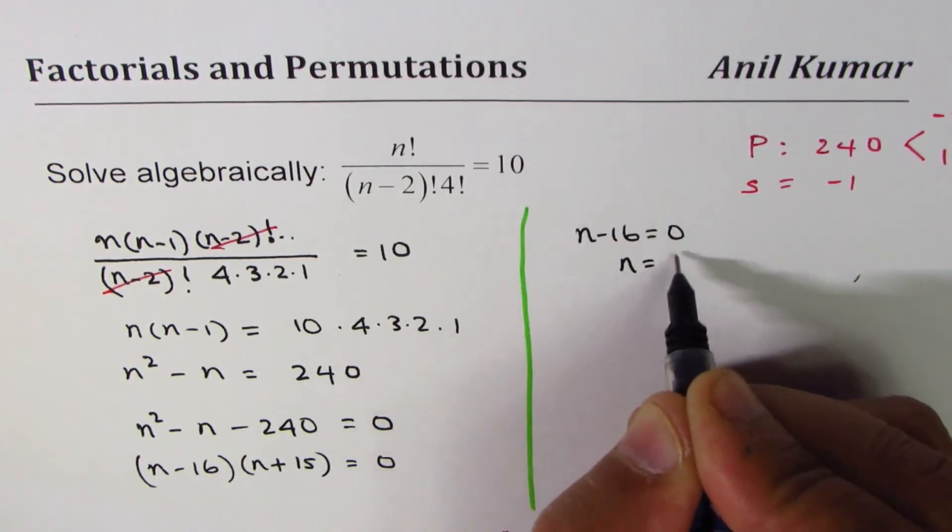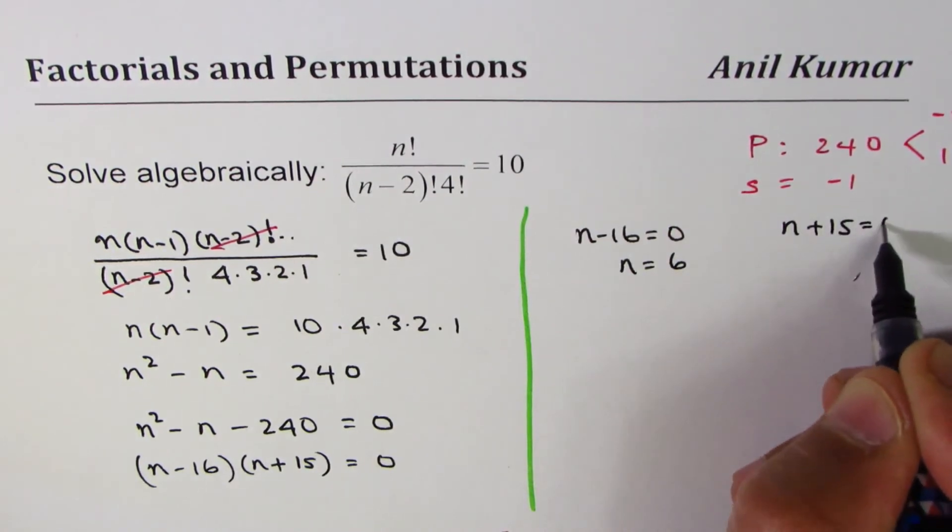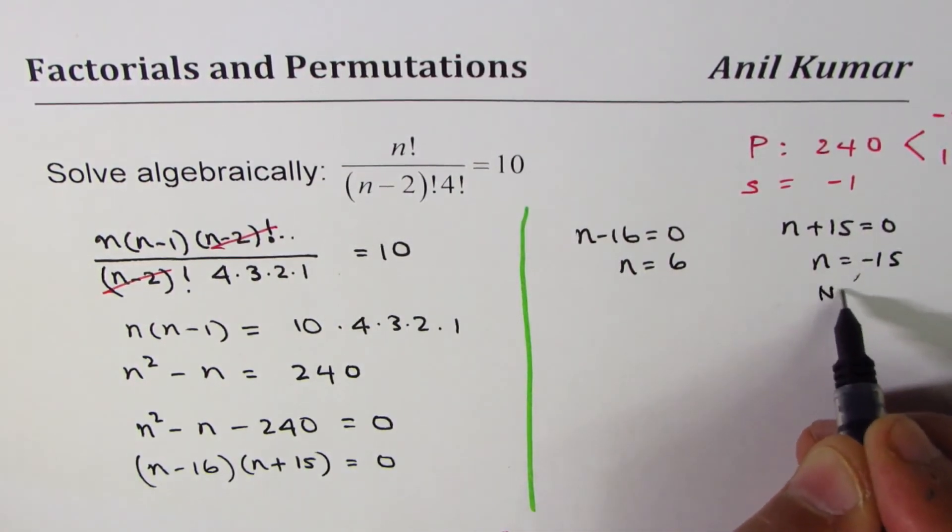So each factor: n minus 16 equals 0 gives us n equals 16. n plus 15 equals 0 gives us n equals minus 15. Now this is not valid.